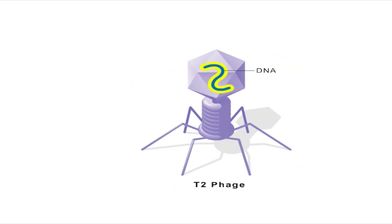Since T2 consists of only DNA and protein, Hershey and Chase reasoned that the genetic material must be one of the two components. So, they designed an experiment to determine which it is.